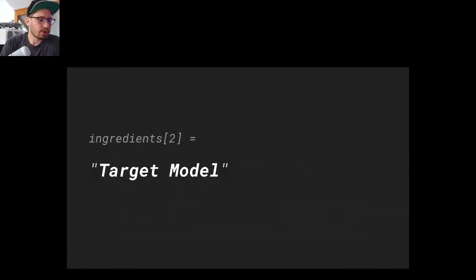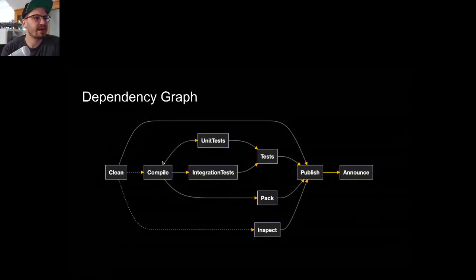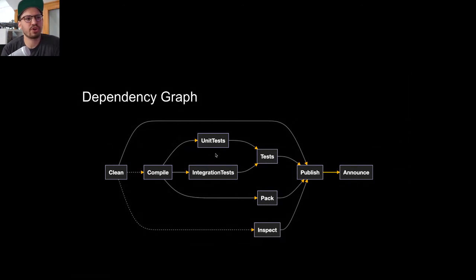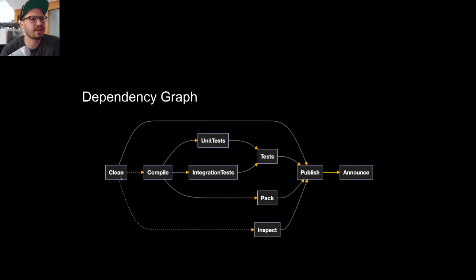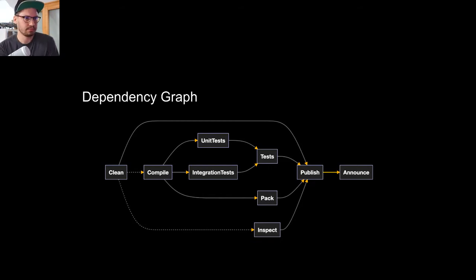Let's look at a more elaborated target model example. I have a 'compile' target; 'unit tests' and 'integration tests' depend on compile. 'Test' in turn depends on both unit tests and integration tests. 'Pack' depends only on compile. We also have a 'clean' target — compile is not directly dependent on clean, but when both are executed together, clean is scheduled first as a soft dependency.